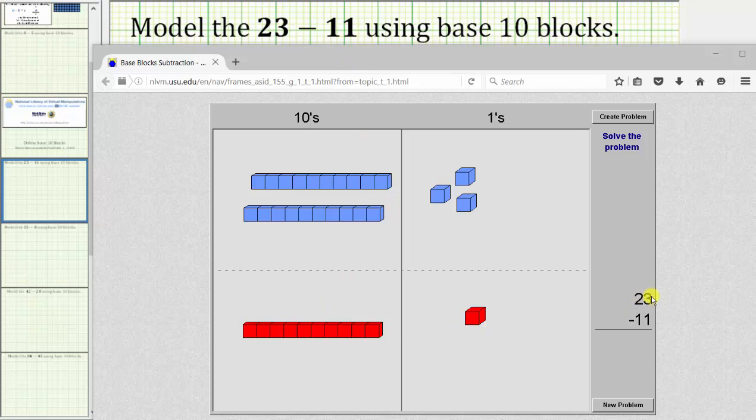Because the problem is 23 minus 11, we want to remove the red quantity from the blue quantity—we'll remove 11 units from 23 units. Beginning in the ones place value, we will remove 1 unit. And then moving to the tens place value, we'll remove 1 rod, which is equal to 10. We are left with 1 rod and 2 units, which equals 12. 23 minus 11 equals 12.